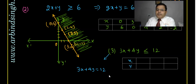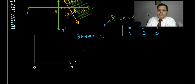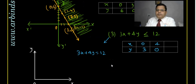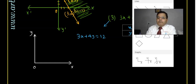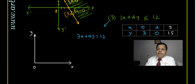Put x equal to zero: y equal to three. Put y equal to zero: x equal to four. So the graph passes through these two points. Also, if x equal to two: 3(2) is six, twelve minus six is six, so 4y equal to six giving y equal to 1.5. This is the x-axis and y-axis: x=0, y=3 and x=4, y=0.